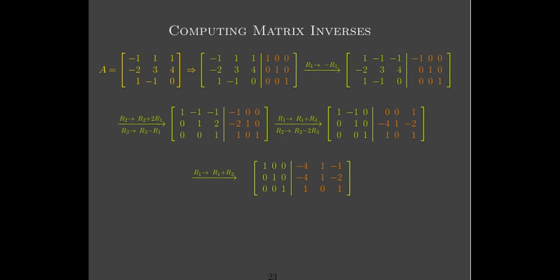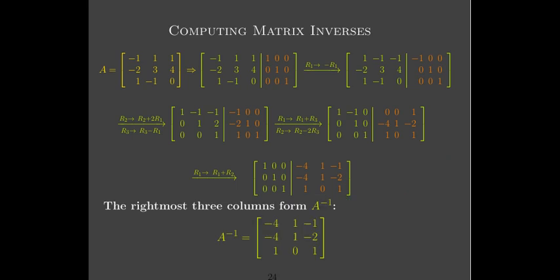Our coefficient matrix has been reduced to the identity matrix — that's what must happen if you have an invertible matrix. The remaining three columns represent the solution to AX = I, which means X is the inverse of A. So we can just read off the inverse of A from those three columns.